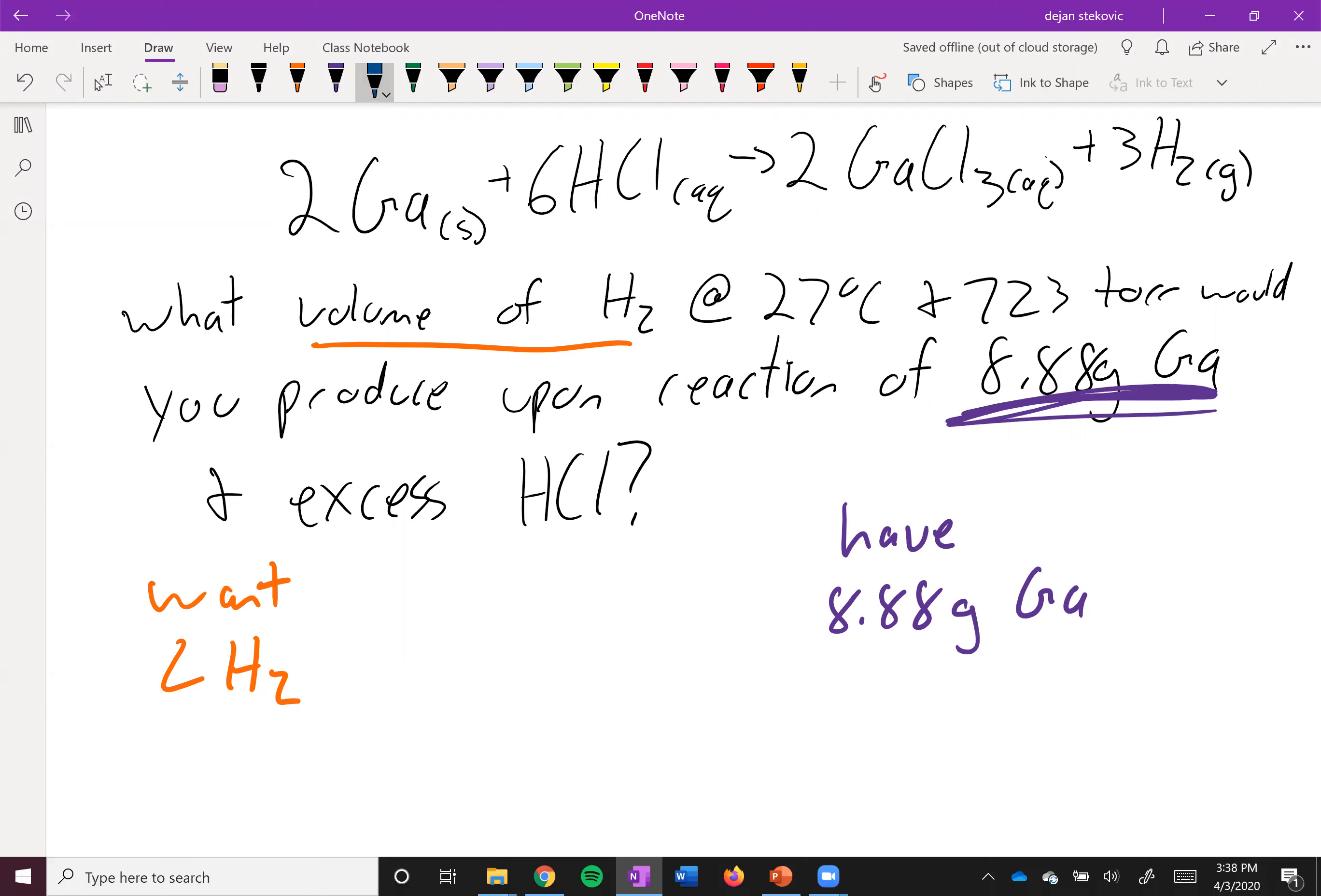Another thing we could look up in terms of gallium is the molar mass. So go ahead and take a second, look that up. You can use a periodic table. You should get 69.723 grams per mole.